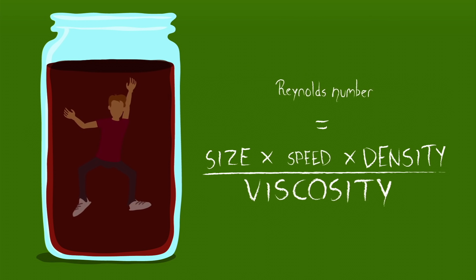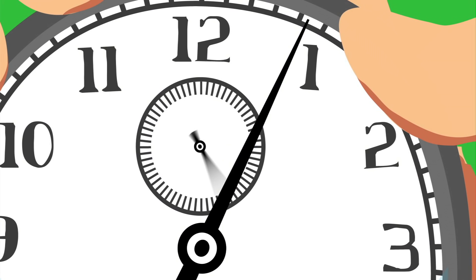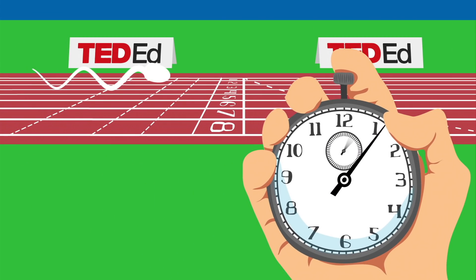Picture yourself in a tub of molasses, with your arms moving about as slow as the minute hand of a clock, and you'd have a pretty good idea of what a sperm is up against.